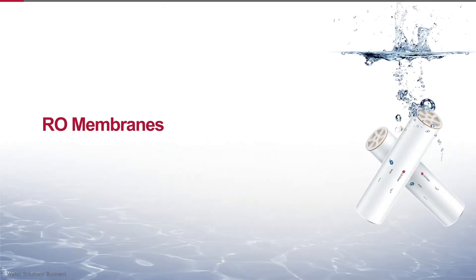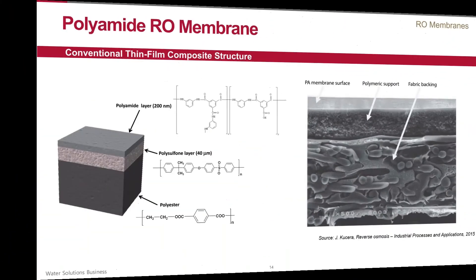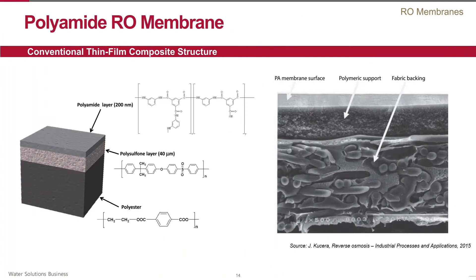As you understand, the most important component of the reverse osmosis process is the membrane. Today, the most widely used type of RO membrane is a polyamide thin film composite. It consists of three layers: a semipermeable thin layer that is less than 0.2 micron — 200 nanometers or less — made of aromatic polyamide, which is supported by two layers.